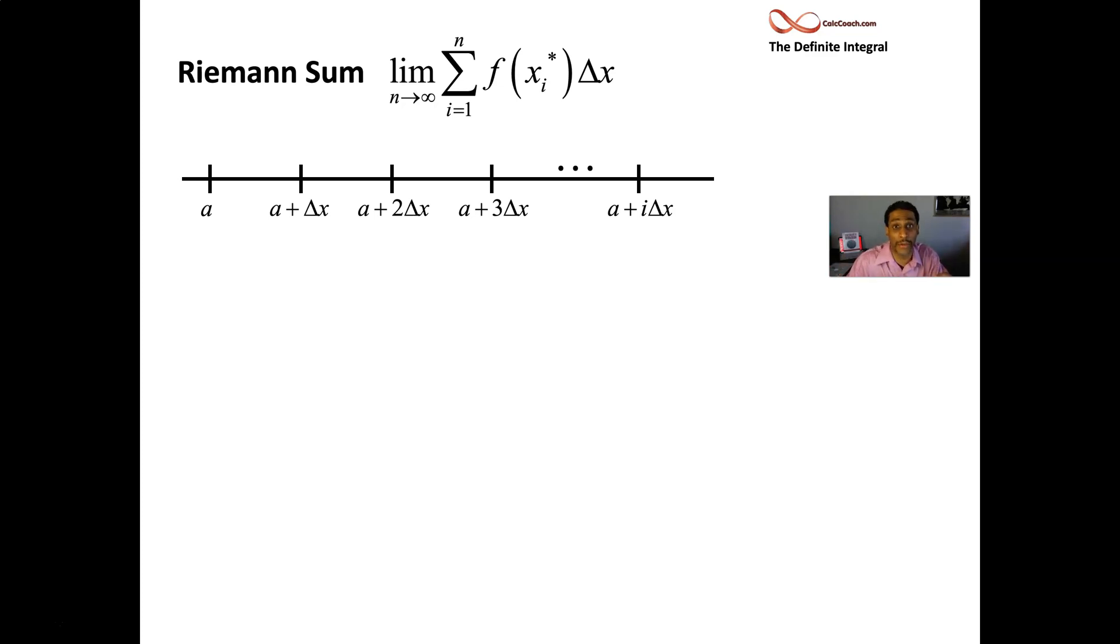We'll label these points: x zero or x naught, then x one, x two, and the counter is how many copies of delta x you're using - they match up. This one is called xi.